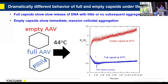Now getting into the capsids — we were rather startled to see this. If we take the empty AAV capsids and thermally stress them mildly at 44°C, plotting Mw/M0, we get massive colloidal aggregation happening very quickly, and then you see very large particles individually scattering light, popping in and out of the scattering volume. This is an immediate, massive colloidal aggregation for the empty capsids.